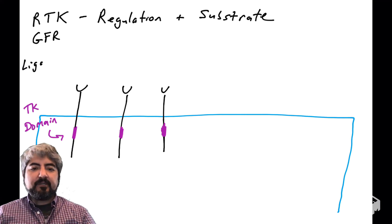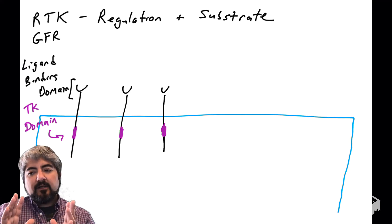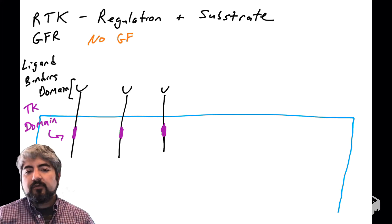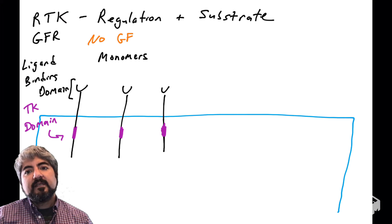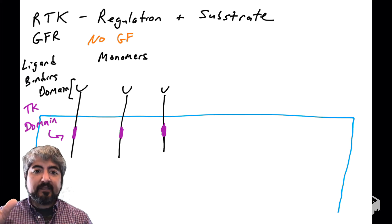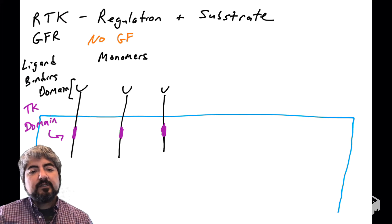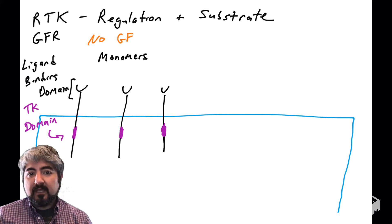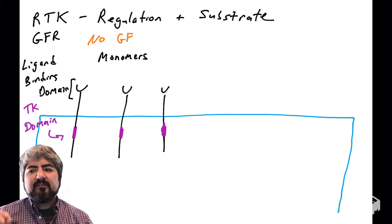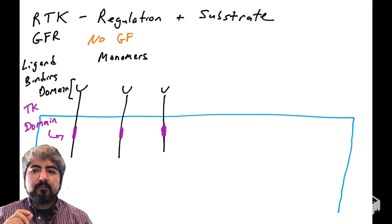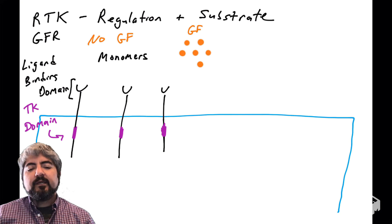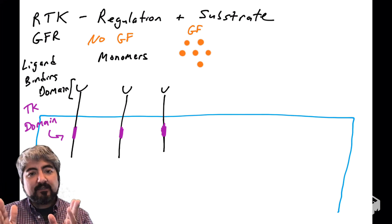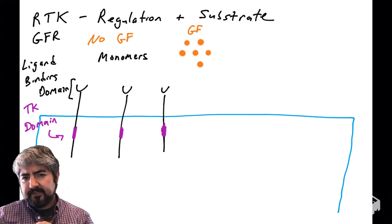Let's look at these growth factor receptors when cells are in G1 and there's no growth factor present. You'll see I've drawn some of the domains of the growth factor receptor: the ligand binding domain, which is extracellular, with no ligand bound, and intracellularly the tyrosine kinase domain. These proteins exist as monomers — that term will become clear shortly.